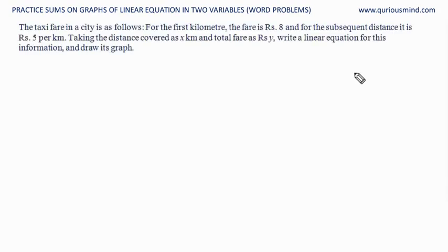The taxi fare in a city is as follows. For the first kilometer, the fare is rupees 8 and for the subsequent distance it is rupees 5 per kilometer. Taking the distance covered as x kilometer and total fare as rupees y, write a linear equation for this information and draw its graph.